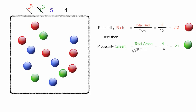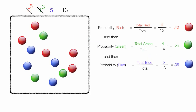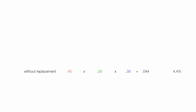Now I have 3 green marbles and 13 total marbles. And then I calculate the probability of picking a blue marble, which is equal to 5 out of 13, which is equal to 0.38. Without replacement, the denominator goes down by 1 each time — it's not constant like it was with replacement. Multiplying these three values together gives 0.044, or 4.4%, without replacement.